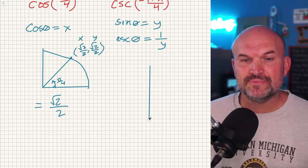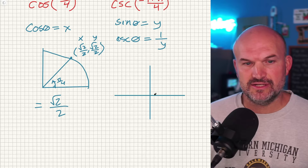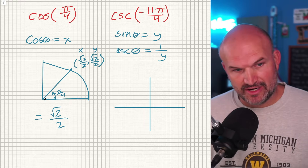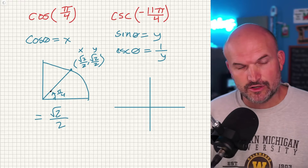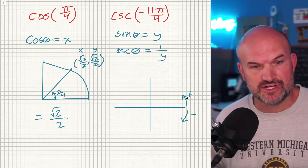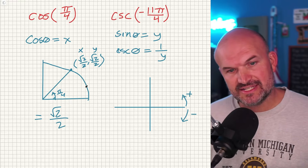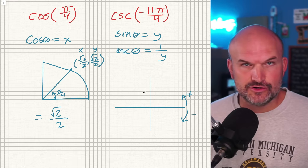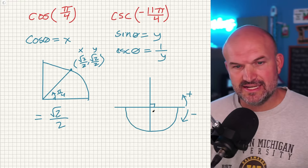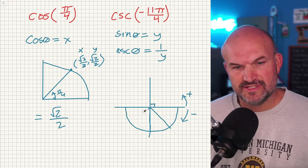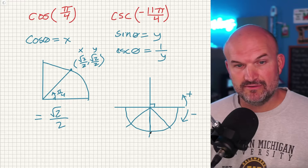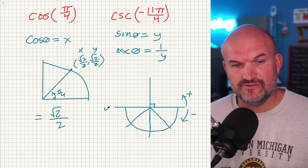We need to find where -11π/4 lands on the unit circle. Let's practice graphing angles in standard form. The positive direction is counterclockwise and the negative direction is clockwise. Going clockwise, π/4 is like 45°, π/2 is 90°, and so on. Counting in the negative direction: -4π/4 brings us halfway, -8π/4 is a full revolution.